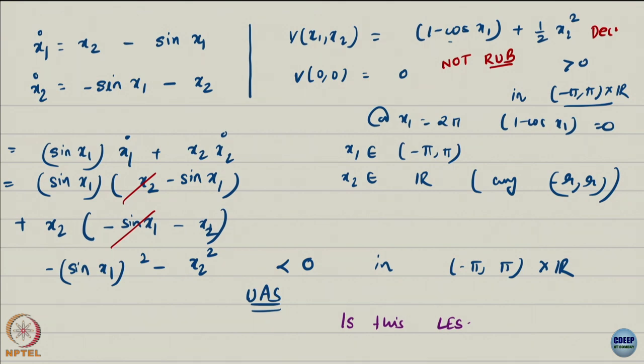Now, what happens if I take x1 to be arbitrary? Notice, how do we check for positive definiteness? We check where it becomes 0. And if any of those points are non-zero states, then we have a problem. So this becomes 0 whenever 1 minus cos x1 becomes 0. And 1 minus cos x1 will become 0 at all 2n pi.